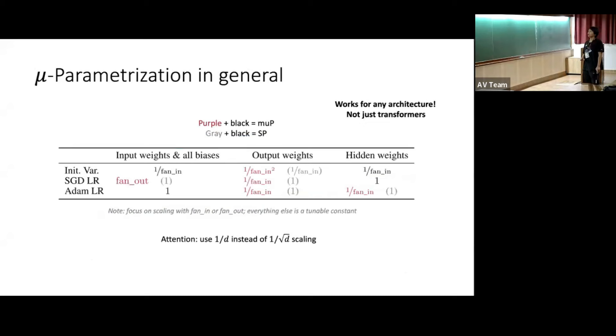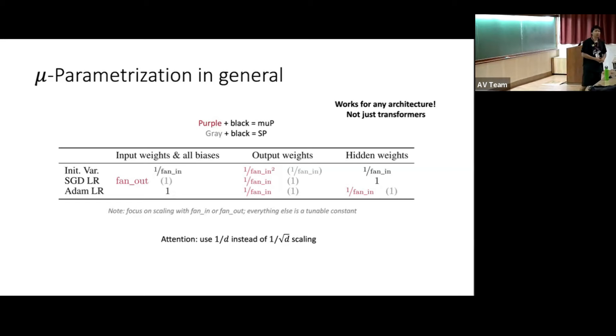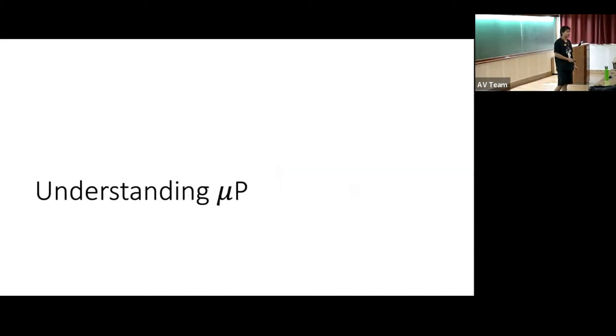I talked a little about the intuition behind μP, giving a simple example using an MLP. With that example in mind, I presented the table describing what μP actually is. But we can only get so much intuition in a short time, so for the first part of today's lecture I'll talk about how we should understand μP — a more thorough understanding of this parameterization.